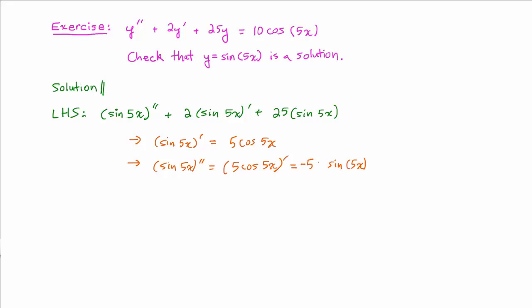And again, we multiply by the derivative of the inner function, which is 5, so we get negative 25 sine of 5x.